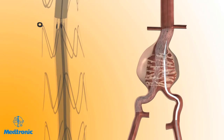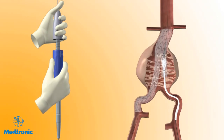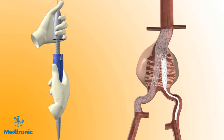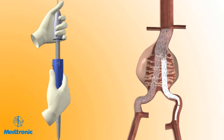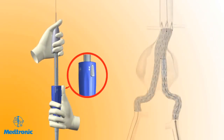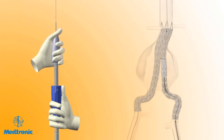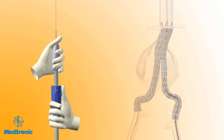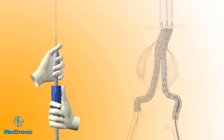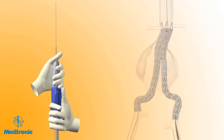Hold the front grip of the delivery system stationary, then slowly withdraw the graft cover with the other hand by rotating the slider counterclockwise. At any point, use your thumb to pull the trigger on the slider and pull the slider back all the way to finish deploying the stent graft. To configure for removal, continue to hold the delivery system with one hand on the front grip and the other hand on the slider. Pull back the slider trigger and hold the slider stationary while bringing the front grip to the slider. Gently remove the delivery system using fluoroscopy to ensure that the stent graft does not move during withdrawal.